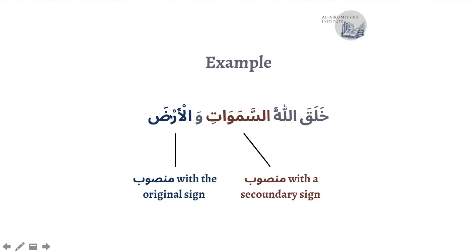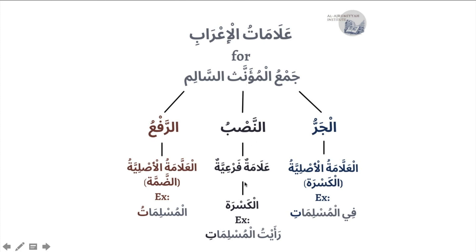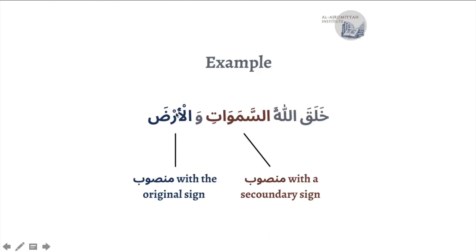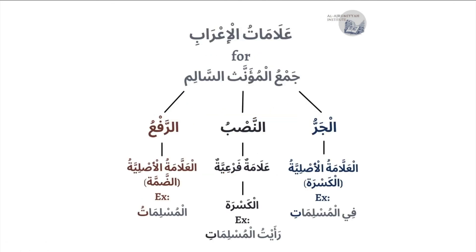'Al-Ard' is ma'tuf (conjoined) to 'al-Samawat' and takes the same I'rab. So 'Al-Ard' is also Mansub — but it takes the original sign, which is the Fathah: 'Arda'. Both 'Samawat' and 'Ard' are Mansub, but 'Samawat' takes the secondary sign (Kasra) because it is a Jama' Mu'annath Salim, while 'Ard' takes the original sign (Fathah) because it is a regular noun. Insha'Allah this concept will become second nature with practice.